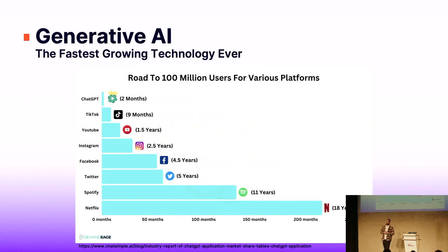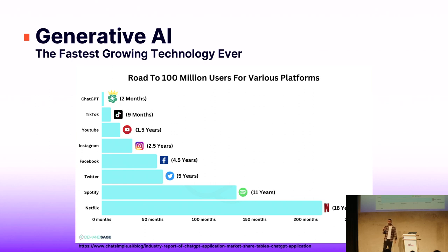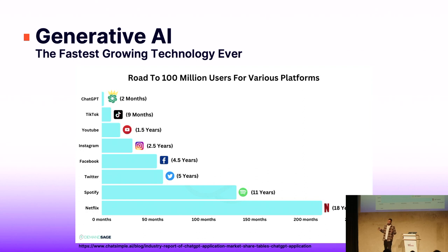Generative AI is the fastest growing technology ever. Only ChatGPT itself got 100 million users in less than two months — faster than any other app, any other technology. In my opinion, the revolution of generative AI and LLMs is the biggest thing that has happened since the establishment of the internet, and it's much bigger than the establishment of the cloud.